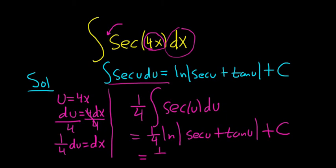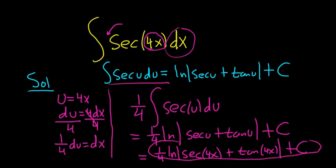To finish, all we have to do is replace u with 4x. So this is one-fourth natural log of the absolute value of secant 4x plus tangent 4x, plus c. And that is the final answer.